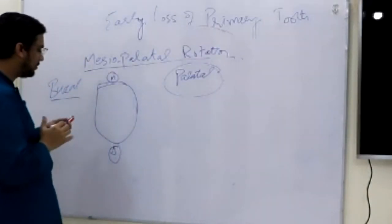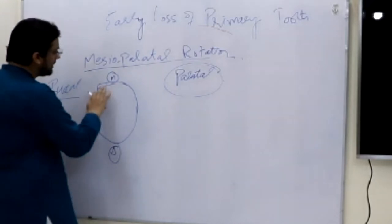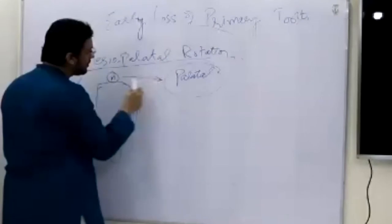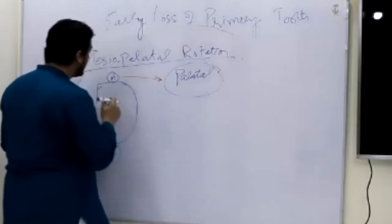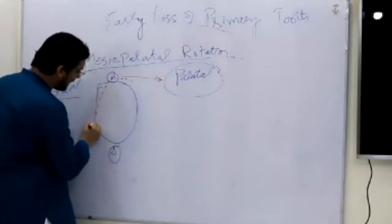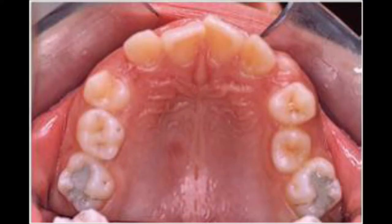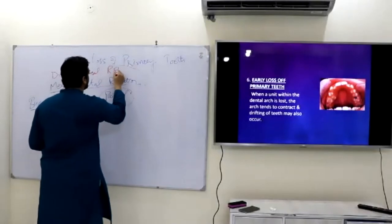If this tooth is rotated in a way that the mesial part has moved towards the palatal side, we describe this as mesiopalatal rotation. Alternatively, since the distal side has moved towards the buccal side, we can describe the same situation as distobuccal rotation — both terms refer to the same situation.